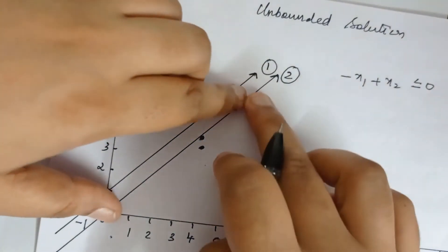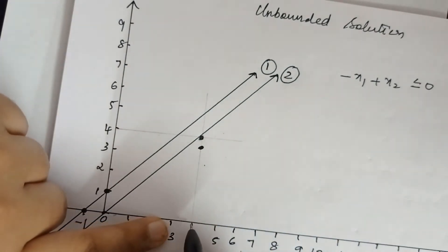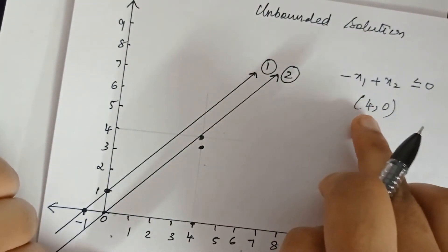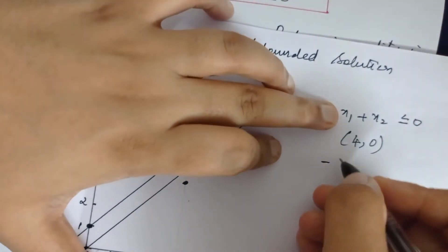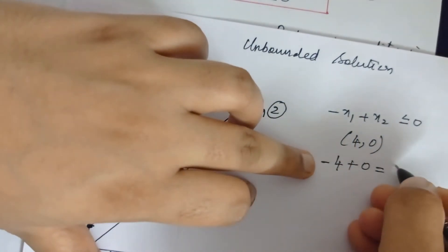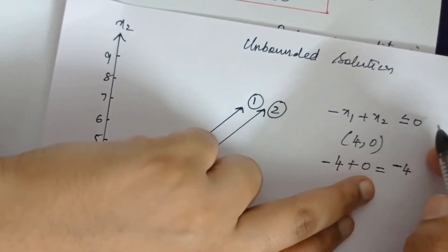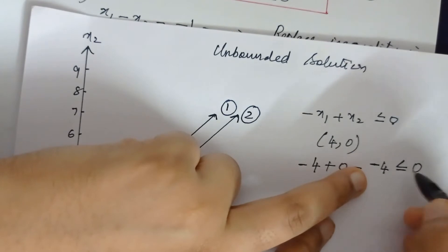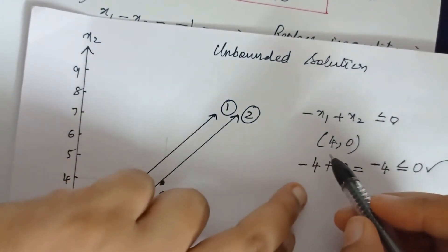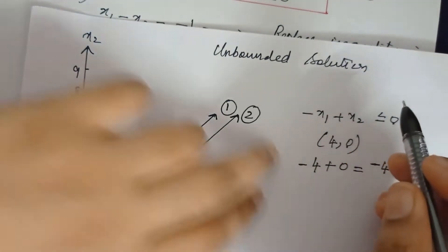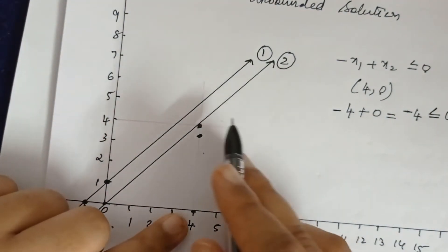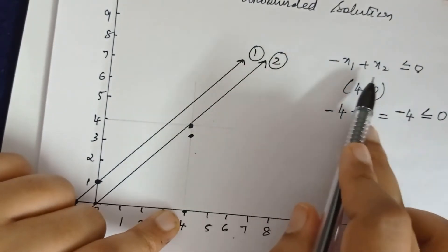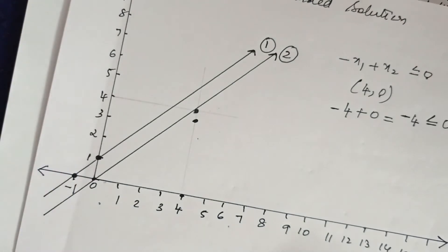To determine the shading region, take a point below the graph: (4, 0). Substituting x1 = 4, x2 = 0: -4 + 0 = -4. Is -4 ≤ 0? Yes, -4 is less than 0, so (4, 0) satisfies the constraint. This means we shade the region below the line.